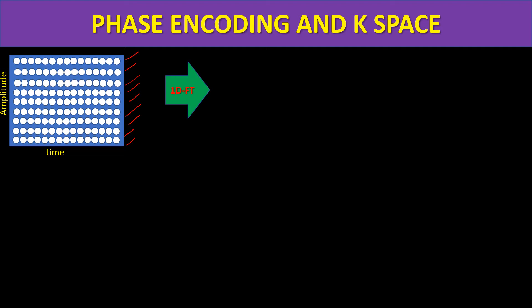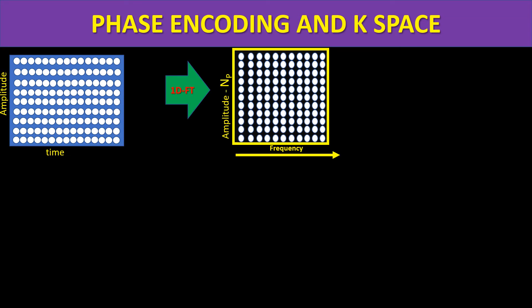The number of phase encoding steps equals the number of pixels we want to resolve. The k-space contains amplitude with respect to time. After measuring the same number of phase encoding steps, I apply a 1D Fourier transformation and obtain multiple frequencies and their contributions to the amplitude at each level. A Fourier transformation is done at each level.